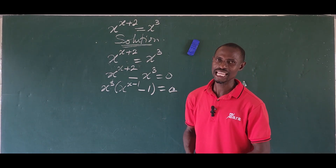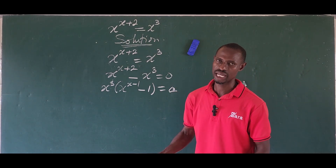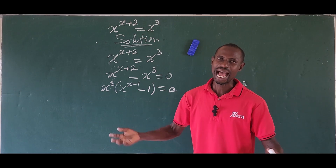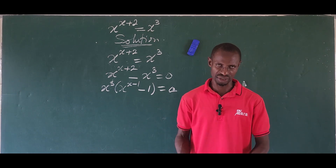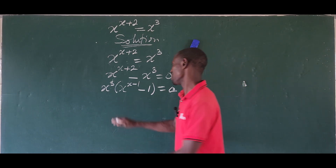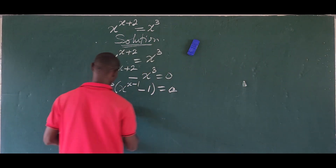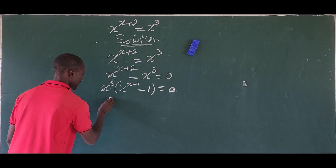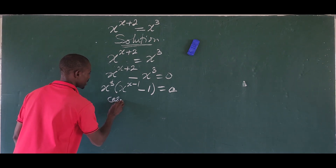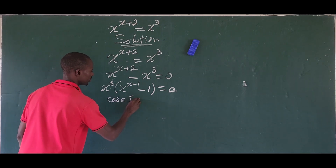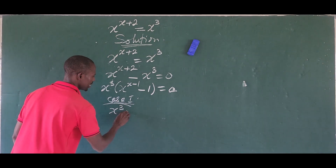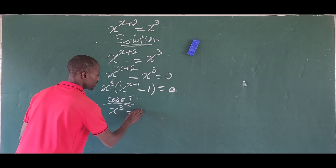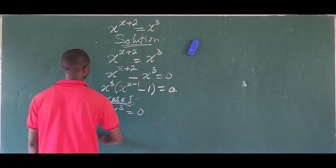We apply the zero product property: if a times b equals 0, then either a equals 0 or b equals 0. This gives us our first case scenario — Case 1 — which is x to the power of 3 equals 0.